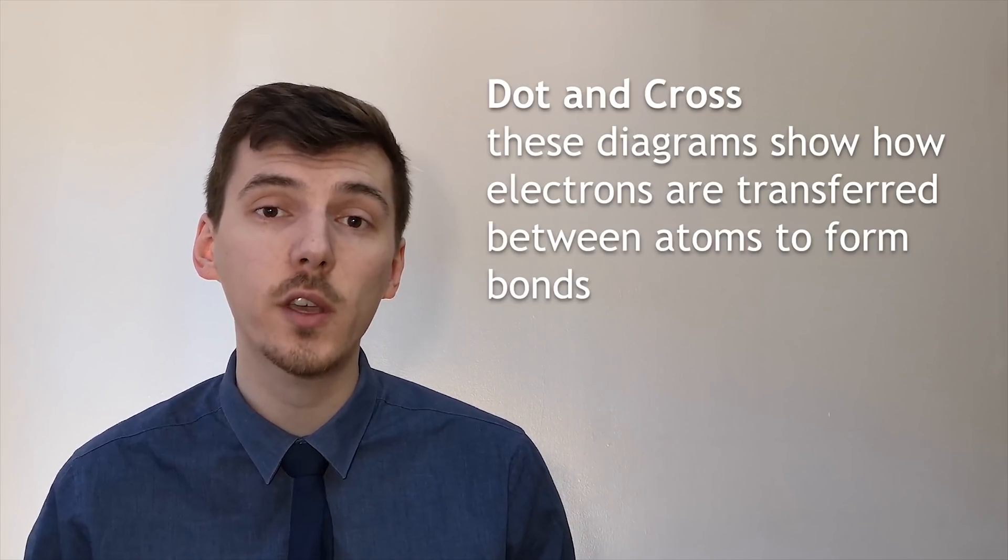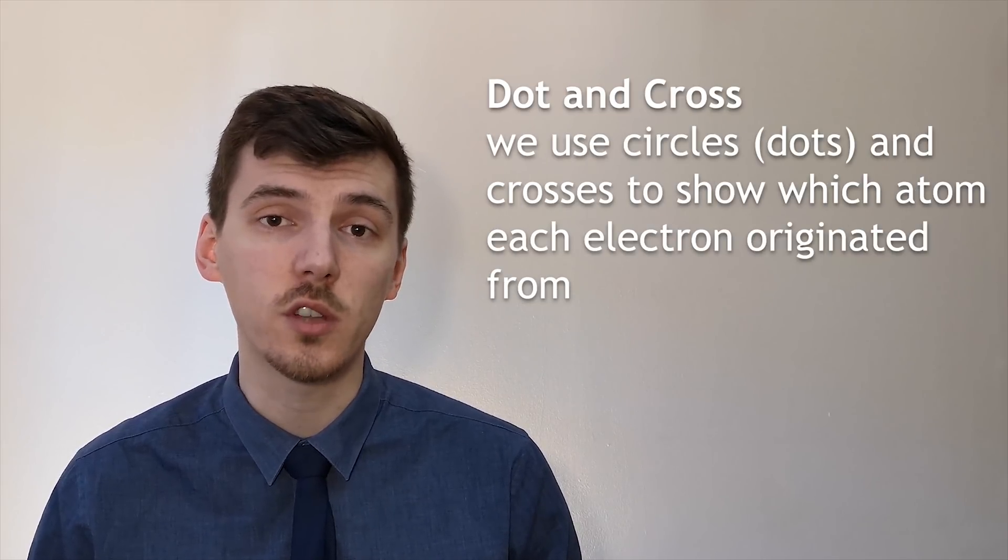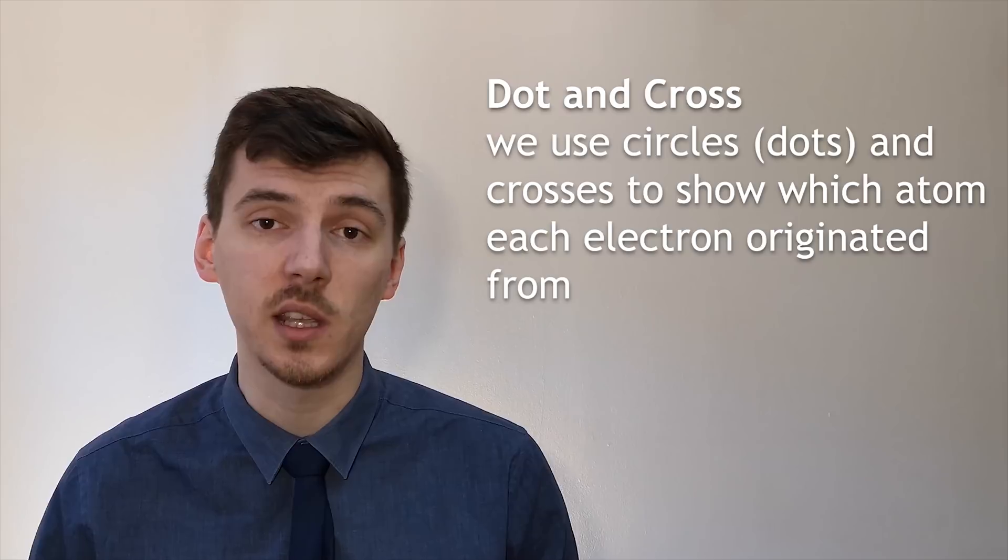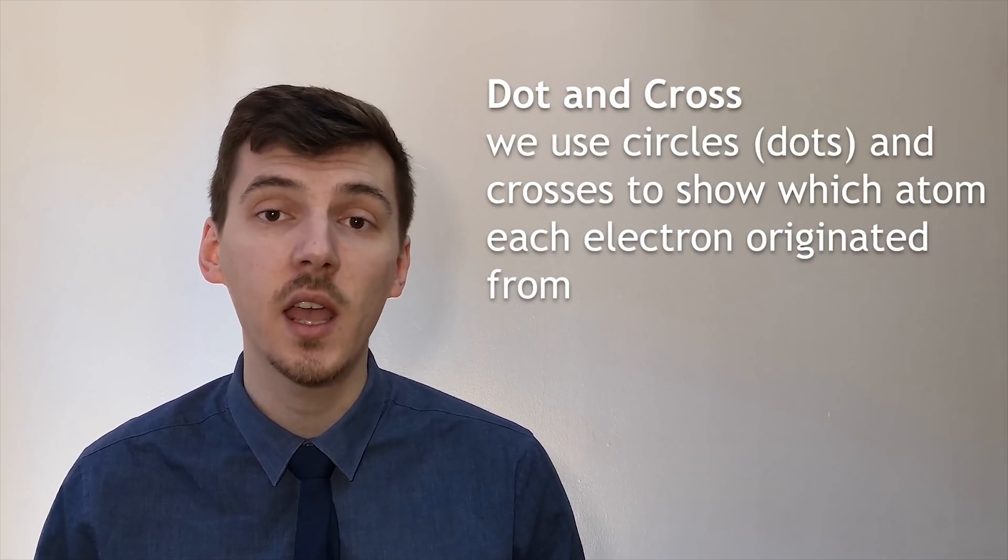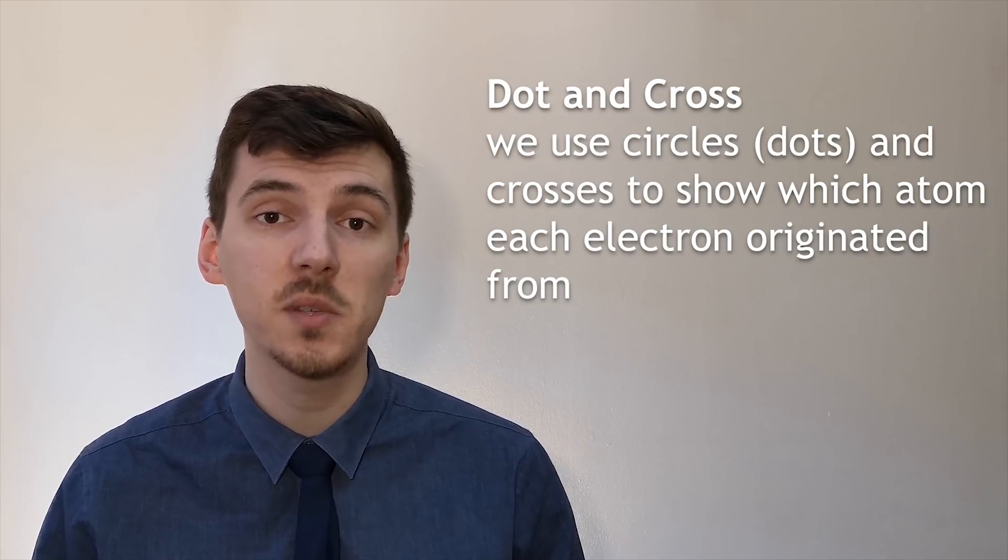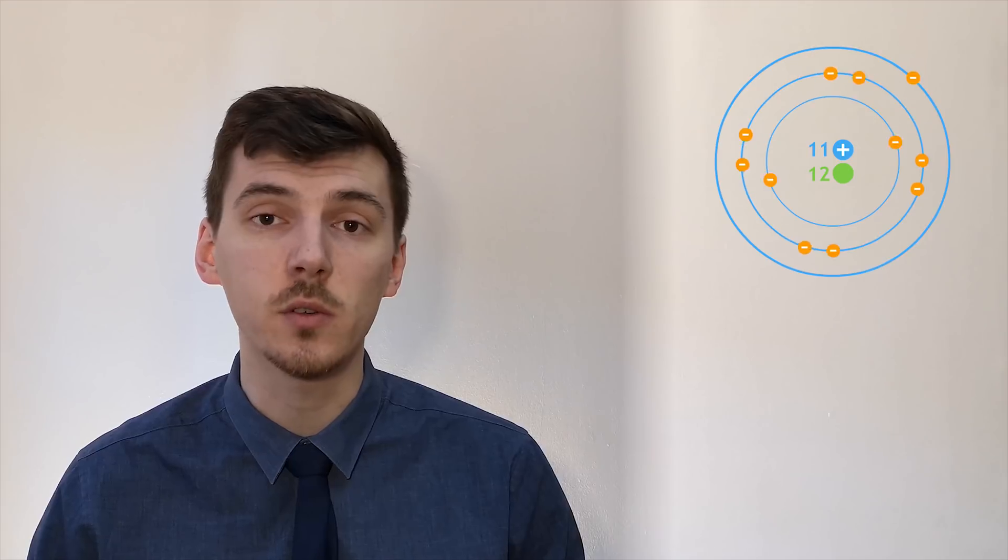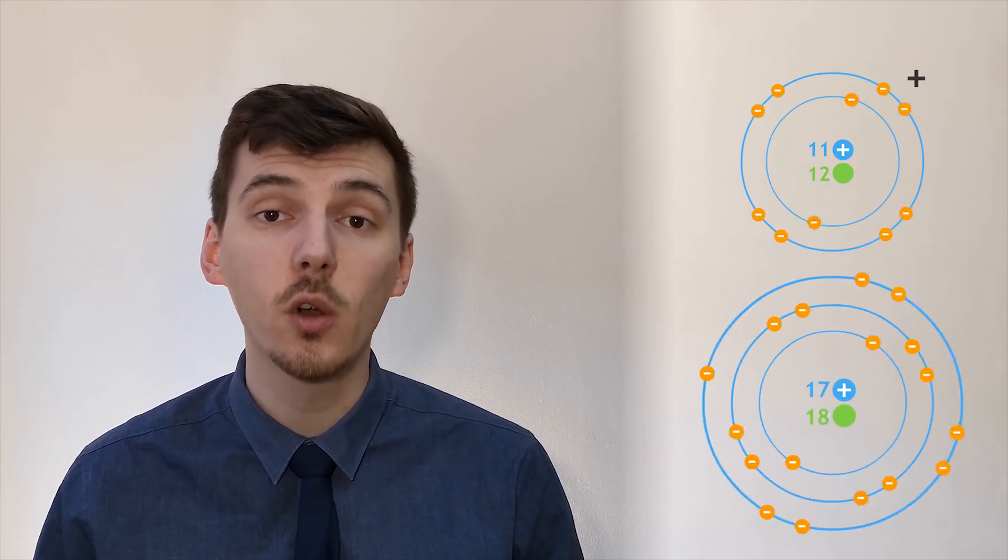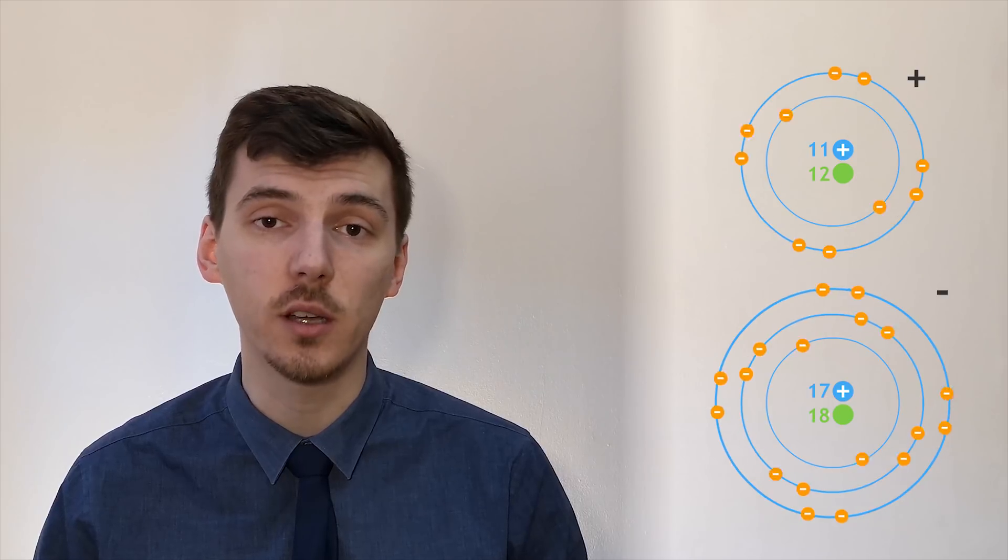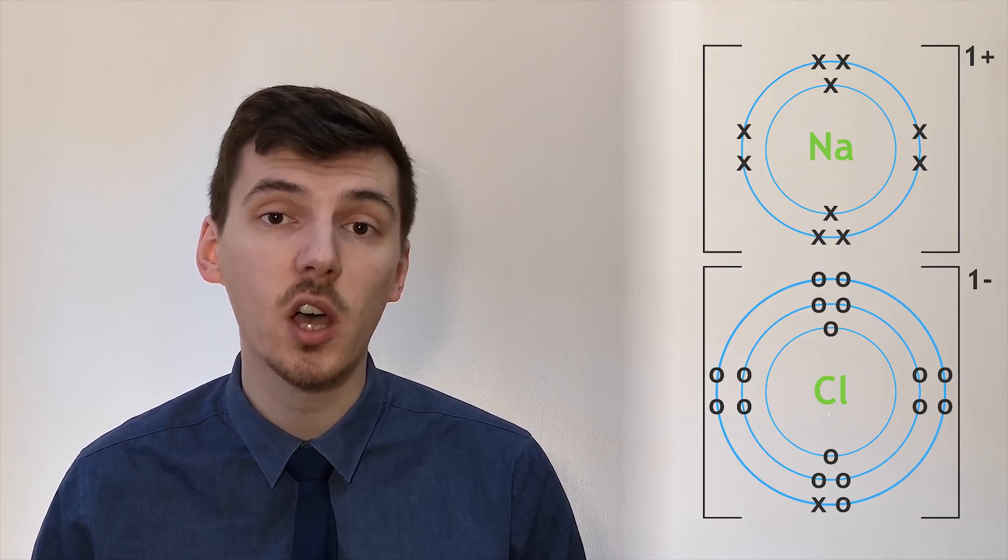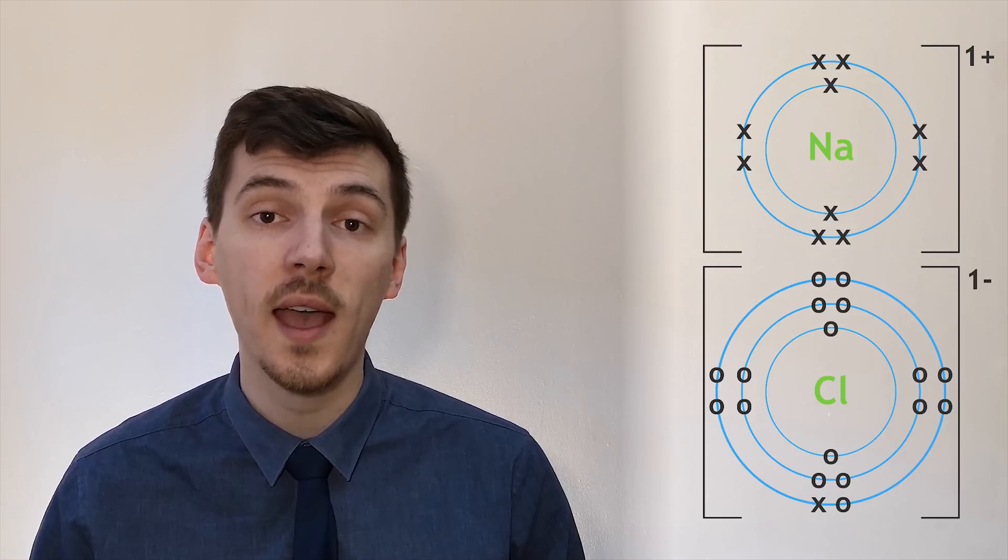When an exam question asks you to draw an ionic bond they'll be looking for a dot and cross diagram. When we draw dot and cross diagrams for ions they're very similar to the electron configuration diagrams that we will have drawn for atoms in our previous videos. The only difference here is now we've got to take into account what the atom is going to look like after it's either gained or lost electrons. We can take a look at this example for sodium chloride. Sodium is going to lose one electron from its outermost shell to reveal a full outer shell below and chlorine is going to gain one electron so it has a full outer shell. When we draw these we must make sure we include square brackets around the ions and we must include their charge in the top right hand corner. This shows that an ionic bond has been formed between these two ions.